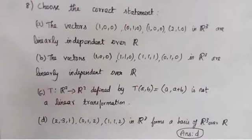And eighth question. Choose the correct statement. First three statements... that's correct. And option D. If you see, that's correct. So 2 minus 3 is 1, 0, 1, 2, 1, 1, 2, 1, 1, 2. This is in R cube. Forms a basis of R cube over R. And this is the correct answer.